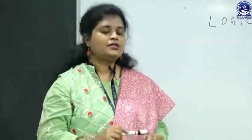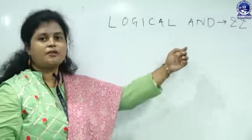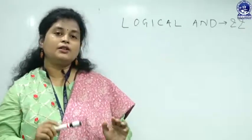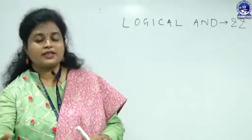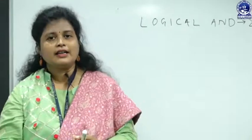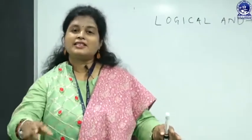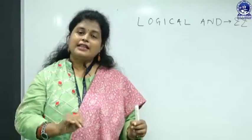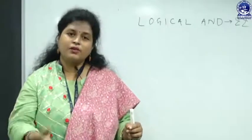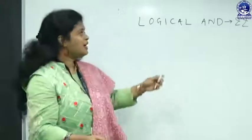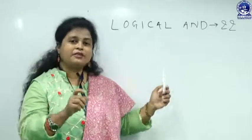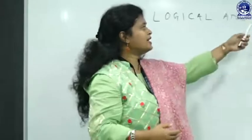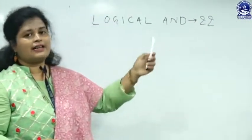Here is a real-life example for logical AND. Suppose you are going to the market and you want to purchase a dress with a price up to 2000 rupees, of a particular brand, and a particular color. You will check dresses based on all these criteria together — brand, style, color, and so on. Similarly, in a program when we want to check multiple conditions combined together, logical AND is used.